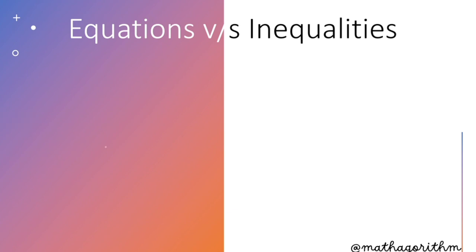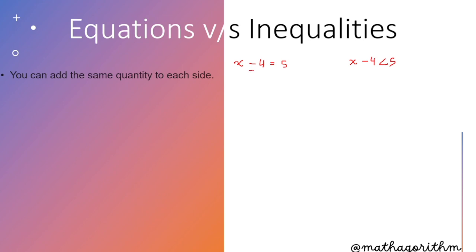You can add the same quantity to each side. Like in equations, if there is a question like x minus 4 is equal to 5, or if I write the same as an inequality, x minus 4 is less than 5. To isolate x, we remove the negative 4 by doing plus 4 on both sides. In the equation, x equals 9. Same thing in the inequality — x is less than 9.